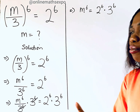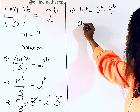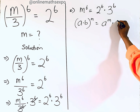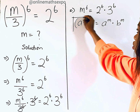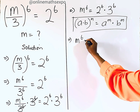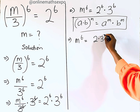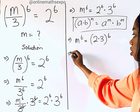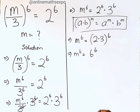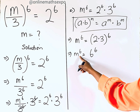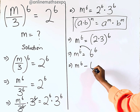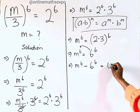Remember that for (a × b)^m it equals a^m × b^m. So 2^6 × 3^6 = (2 × 3)^6 = 6^6. Therefore m^6 = 6^6. Since this carries a positive sign, we bring it to the left side by subtracting, giving us m^6 - 6^6 = 0.